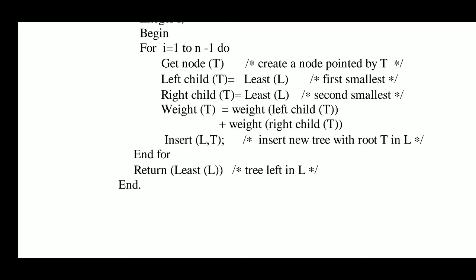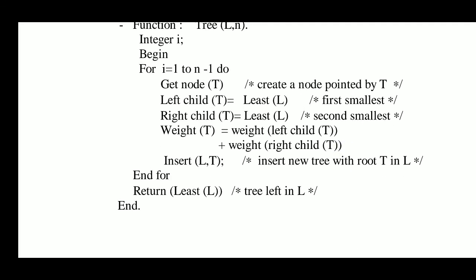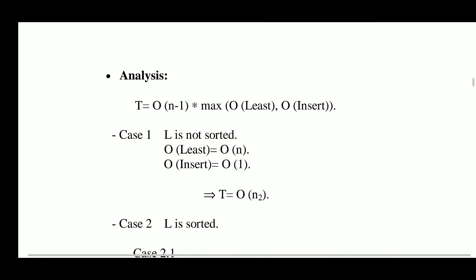After all iterations of the for loop, the optimal merge pattern algorithm returns the least(L) — the merged binary tree containing all elements in the list L. When implementing the program, you will need to use structures with three parameters: a pointer for the left child, a pointer for the right child, and an integer for the weight. get_node(t) creates an instance of that structure each time.